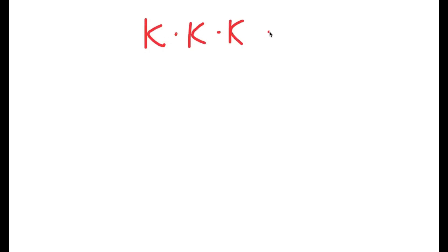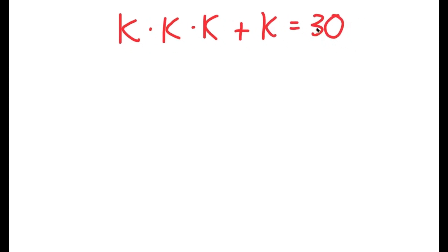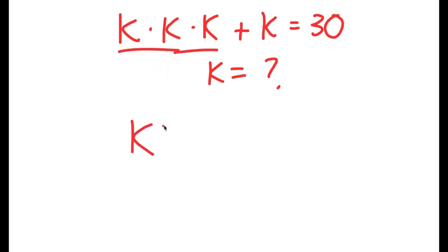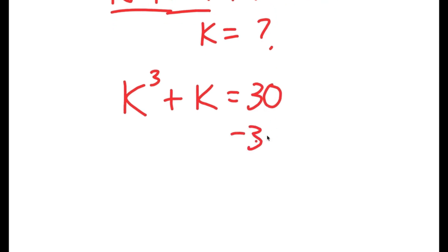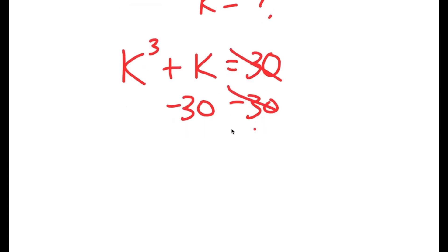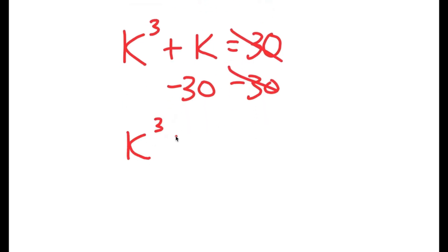In this video, I'm going to solve the equation k times k times k plus k is equal to 30. I want to find the value of k. To start off, k times k times k is the same thing as k to the power of 3. So k to the power of 3 plus k is equal to 30. Now I'm going to subtract 30 on both sides, so I get k to the power of 3 plus k minus 30 is equal to 0.